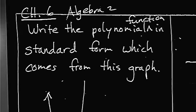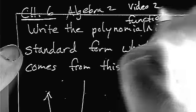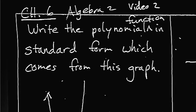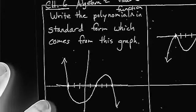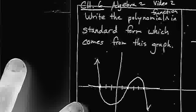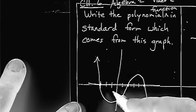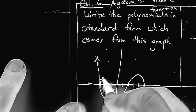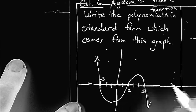Alright, Algebra 2, we're talking about, this is the second video, video 2, and we want to talk about writing the polynomial function in standard form, which comes from this particular graph. So here we have a graph, and we want to identify the zeros from the graph. So obviously we can see that it looks like it goes through negative 3,